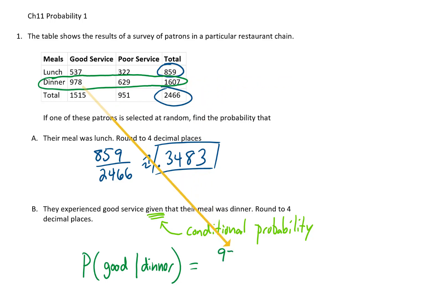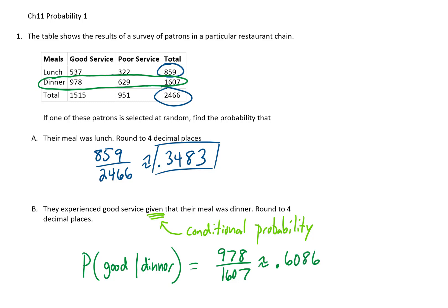978 patrons got good service out of 1,607 that were there for dinner, so that is going to be the answer. Rounded to four decimal places, we get 0.6086.